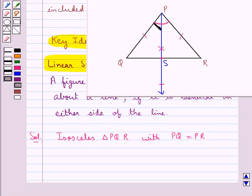This angle P is the angle included between the equal sides PQ and PR. And we have taken PS as the bisector of the angle QPR. So we have to show that the triangle PQR is symmetrical about the line PS which is the bisector of the angle QPR.